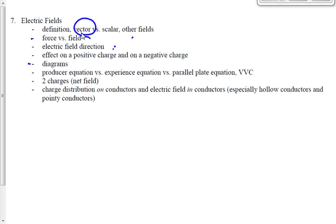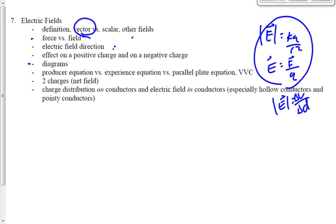The equations, remember we had the producer equation, the experiencer equation, and then the parallel plate equation. Remember that little Venn diagram we had showing when each of them was able to be used: non-uniform fields, uniform fields. Here's two charges. What's the net field right here? Remember, just the same as the forces. Draw a picture, draw a diagram, calculate the fields, add them up.